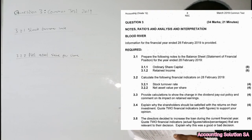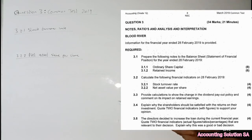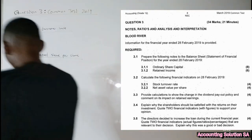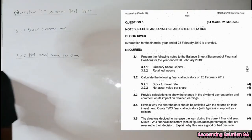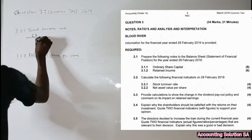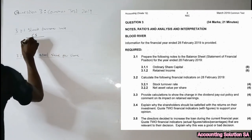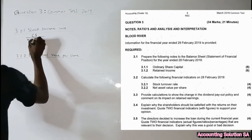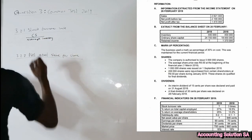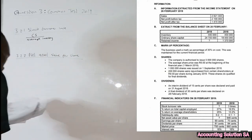For number 3.2.1, Stock Turnover Rate, we need to know the formula first before we start. The formula is: Cost of Sales divided by Average Inventory. You are given a formula sheet, so you can just copy it from there. This is the formula we are going to use — now let's calculate.